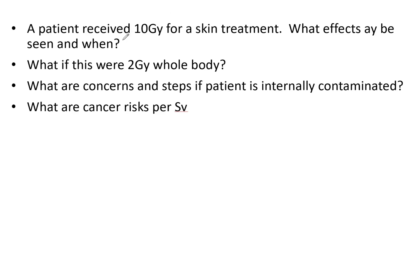For 10 gray to the skin, the first thing is that we are going to see some epilation — they're going to lose hair on their arm or skin wherever it may be. You're going to see some erythema, so reddening of the skin, and then there is going to be some dry desquamation. At 10 gray, we are not quite to the level where we'll see much wet desquamation.